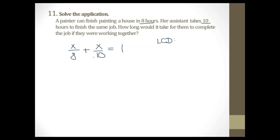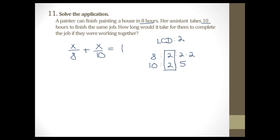To find the LCD of 8 and 10: list the prime factors. 8 equals 2 × 2 × 2 and 10 equals 2 × 5. They share a common 2, so take that once and grab all individual pieces: 2 × 2 × 5 = 40. The LCD is 40. To get to 40, multiply the first fraction top and bottom by 5, and the second fraction top and bottom by 4.